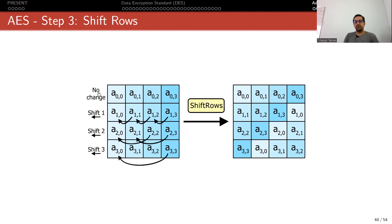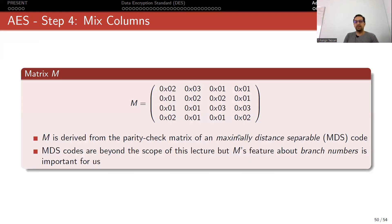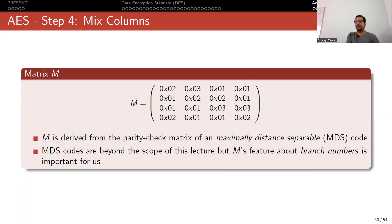For ShiftRows, counting rows from zero: row zero is rotated zero bytes (unaffected), row one shifted one byte left, row two shifted two bytes left, and row three shifted three bytes left. For MixColumns, you take a column, multiply it with matrix M, and write it back. The matrix in hexadecimal notation is important - it is not integer multiplication. M is derived from the parity check matrix of a maximum distance separable (MDS) code from coding theory, providing good resistance against linear and differential cryptanalysis.